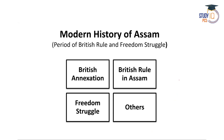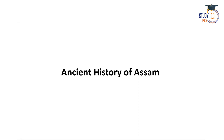Modern history of Assam covers the period of British rule from 1826 up to independence in 1947. We will discuss how the British annexed the territory of Assam after the Yandabu Treaty, the starting of British rule and administration, the freedom struggle of the people of Assam, and other miscellaneous important incidents of the modern period.